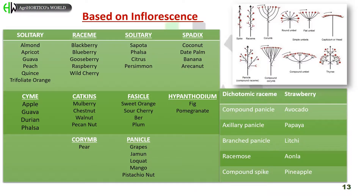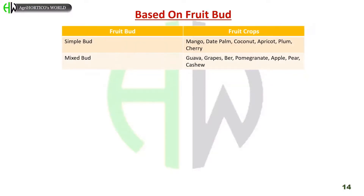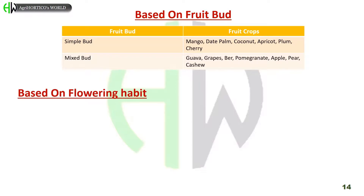Classification based on type of fruit bud. Simple bud is present in mango, date palm, coconut, apricot, plum, and cherry. Mixed bud is present in guava, grapes, bael, pomegranate, apple, pear, and cashew.